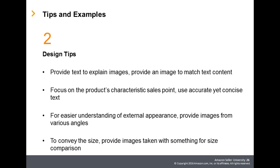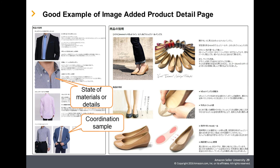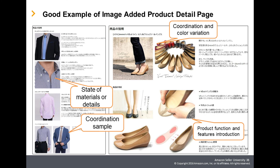In order to create effective Rich Product Description, first prepare text to explain the images. Focus on the product's characteristic sales point, and record accurate yet concise text. Also, for easier understanding of the product's external appearance, provide images taken from various angles, and it is also effective to take images with something that shows a size comparison. For example, materials and details are shown in images, coordination samples, and color variations. Functions and features are introduced with easy to understand images.